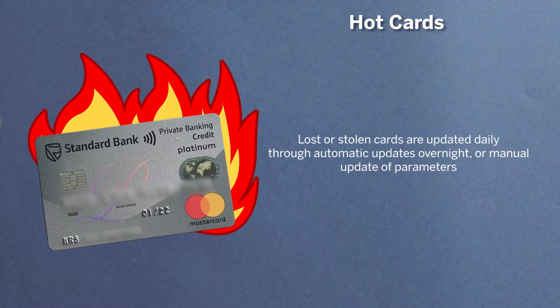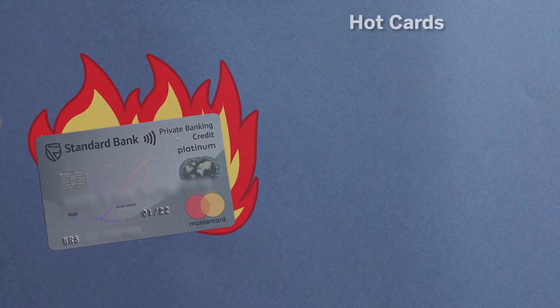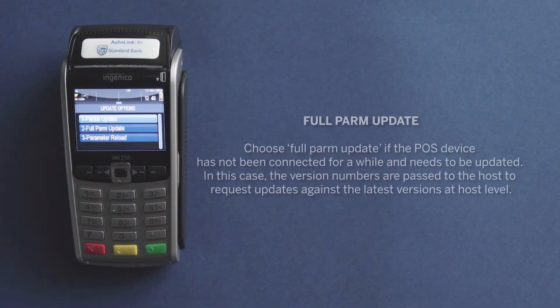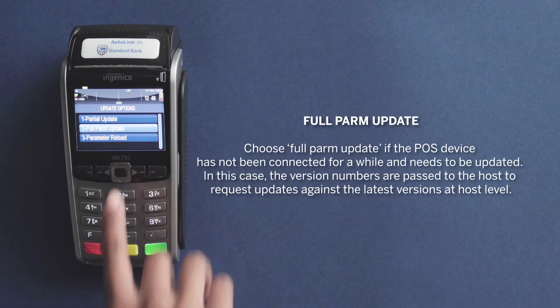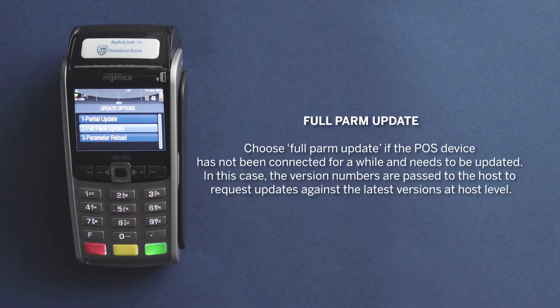If it has all the parameters downloaded, your AutoLink device will immediately pick up a fraudulent card. If you don't keep your AutoLink device plugged in overnight or manually update to the latest software, you don't get the benefit of the parameters and you make yourself open to risk. Choose a full parameter update by selecting Full Palm Update.